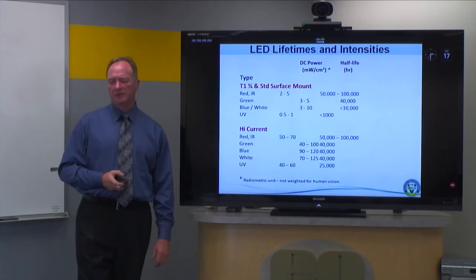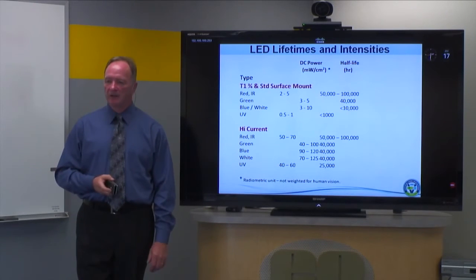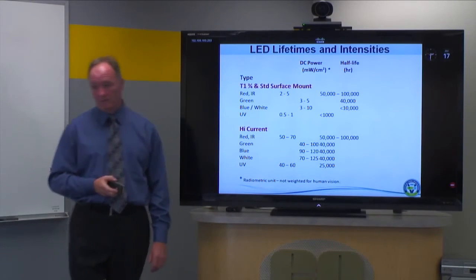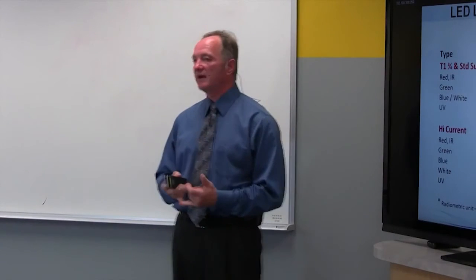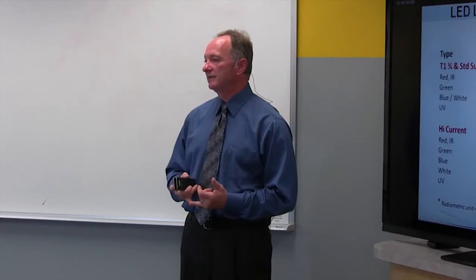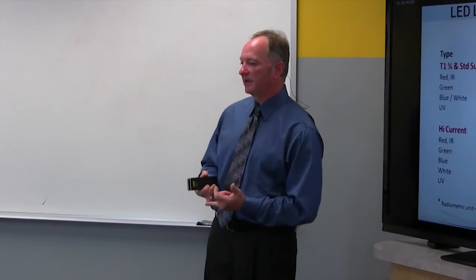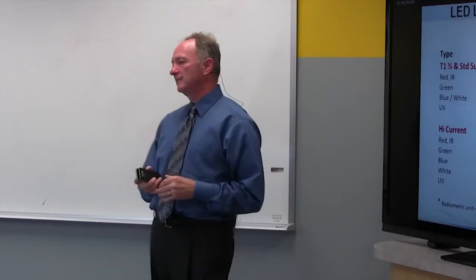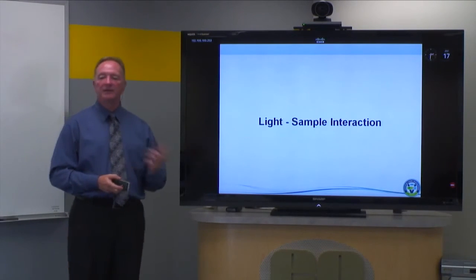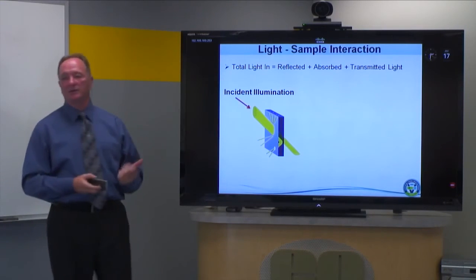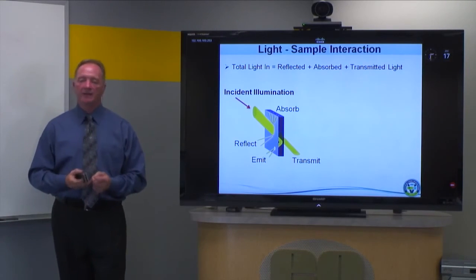On LED lifetimes: high current LEDs tend to have a lot of radiant power and tend to last longer. Even UV LEDs, which were normally very short-lived, now last much longer — up to 25,000 or 30,000 hours on time. That's considered a half-life: after one half-life you have 50% of your intensity left, and after another half-life you have 50% of that, so it's an exponential function.